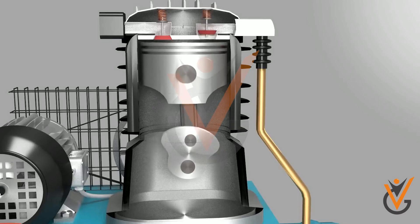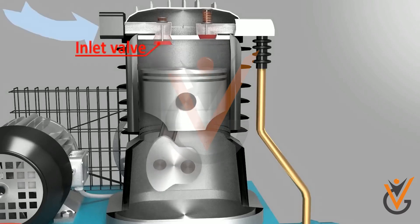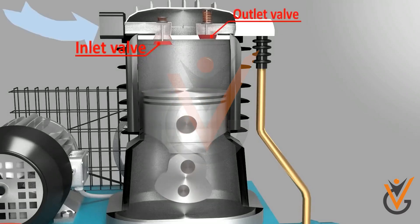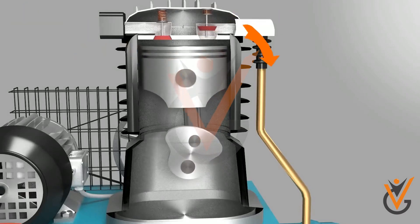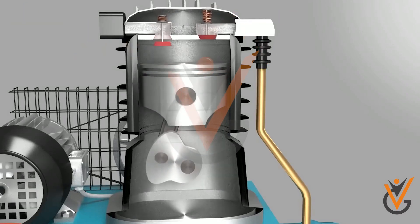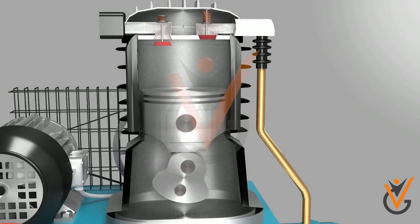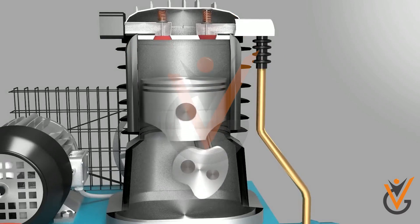A compressor takes in atmospheric air, compresses it, and delivers the high-pressure air to a receiver, from which it may be conveyed by a pipeline.